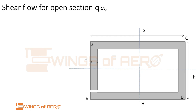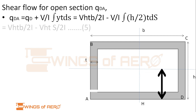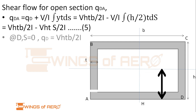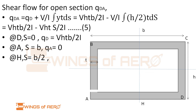Similarly, for shear flow in open section q_DA: q_DA = q_D + (V/I) × integral of y·t·ds. The y-value for DA is −h/2, so applying and integrating gives equation 5. At point D, s = 0: q_D = VhtB/(2I). At point A, s = B: q_A = 0. At point H, s = B/2: q_H = VthB/(4I).